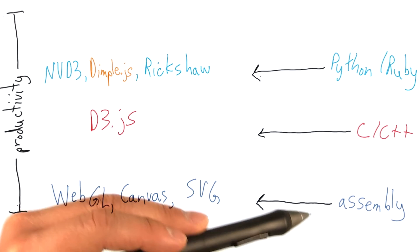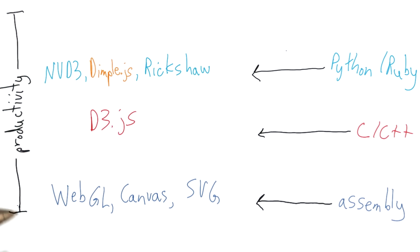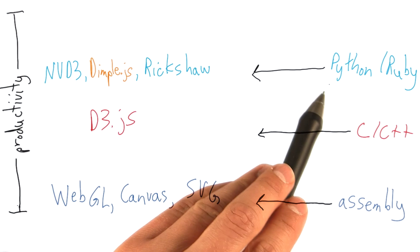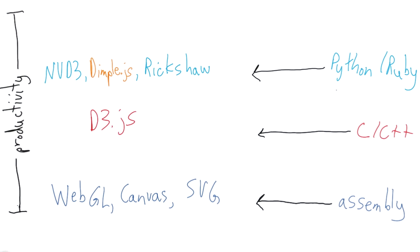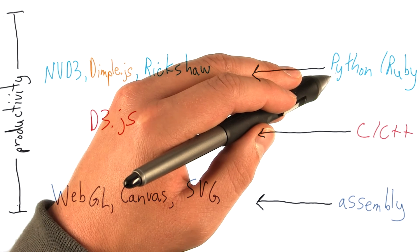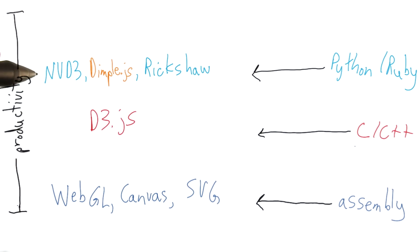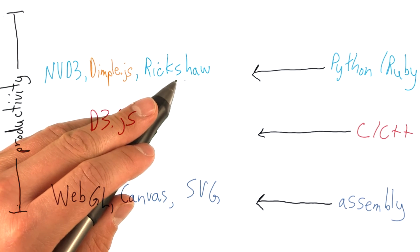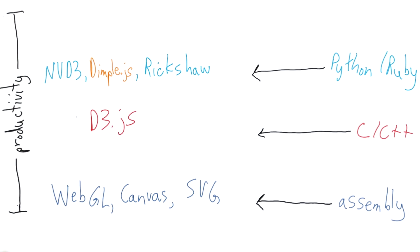And again, going back to our spectrum of programming languages, if WebGL, Canvas, and SVG are analogous to assembly language, d3 is analogous to C and C++, I would say the higher level libraries built atop of d3 are similar in abstraction level to something like Python or Ruby. Python and Ruby are fairly high-level languages. They're interpreted. You don't have to deal with memory collection. And many times they are implemented in C or C++. And just like these higher level languages are implemented in a lower level language, NVD3, DimpleJS, and Rickshaw can be thought of as implemented in or on top of d3.js.